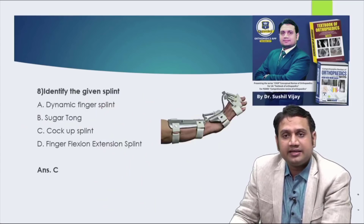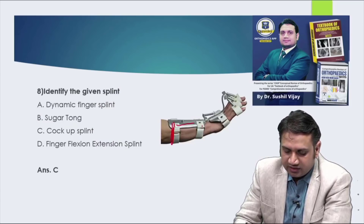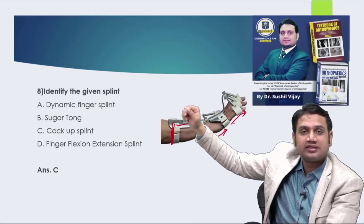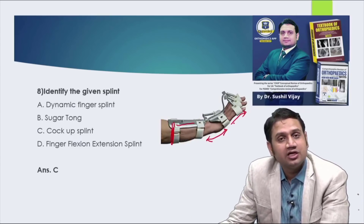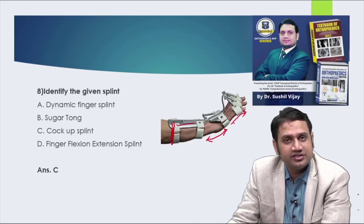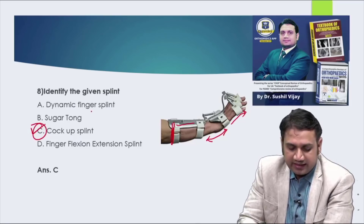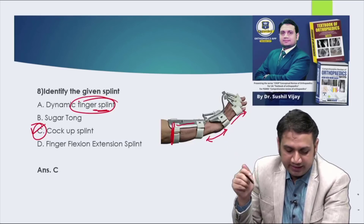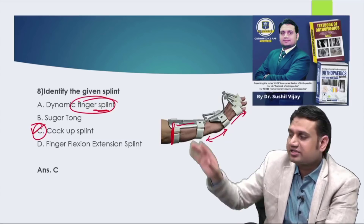Question eight: identify the given splint. The brace shown keeps the wrist and fingers in extension — used to prevent wrist drop and finger drop seen in radial nerve palsy. The splint used for radial nerve injuries is the cock-up splint. A dynamic finger splint would cover only the fingers, whereas this also covers the wrist and part of the forearm — so this is a cock-up splint, a dynamic splint given to avoid contracture.